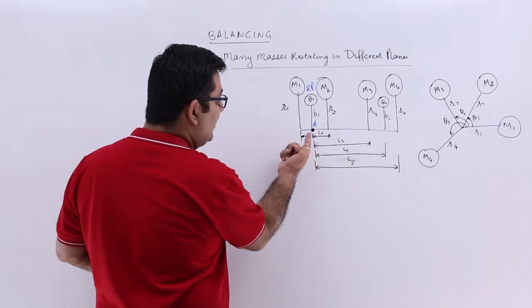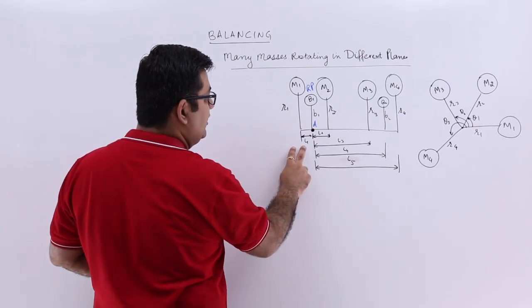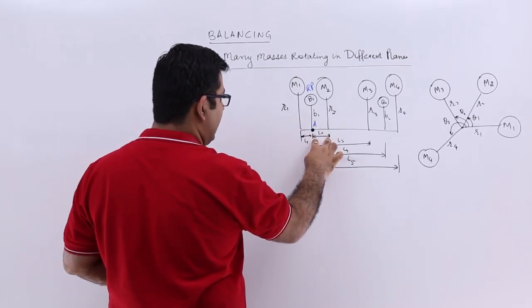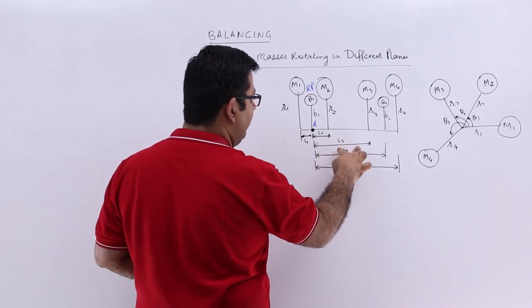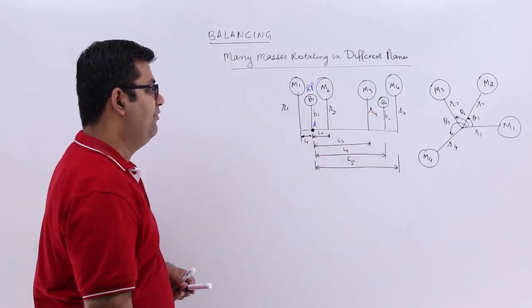So the distance of plane 1 is L1, the distance of the Rb from plane 2 is L2, then we have L3, L4 and L5.